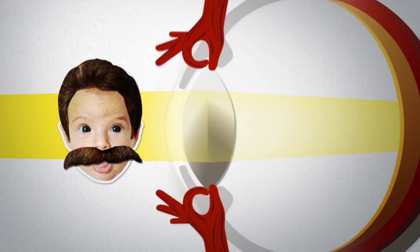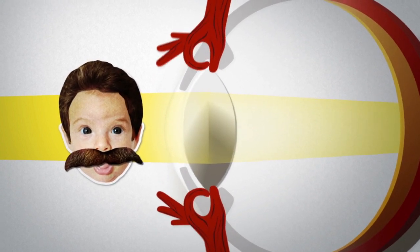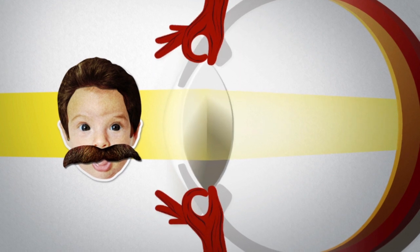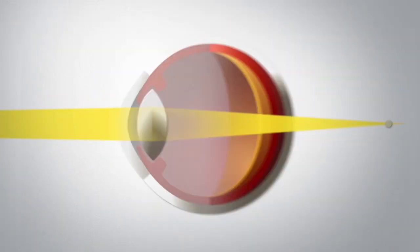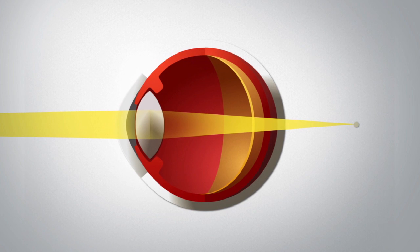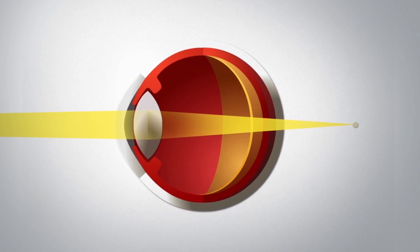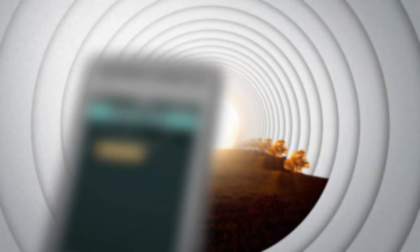But over time, the lens gets stiffer. It becomes a struggle to pull it into shape, especially for seeing up close. Light starts focusing behind your retina instead of on it. And the images sent to your brain? Blurry.